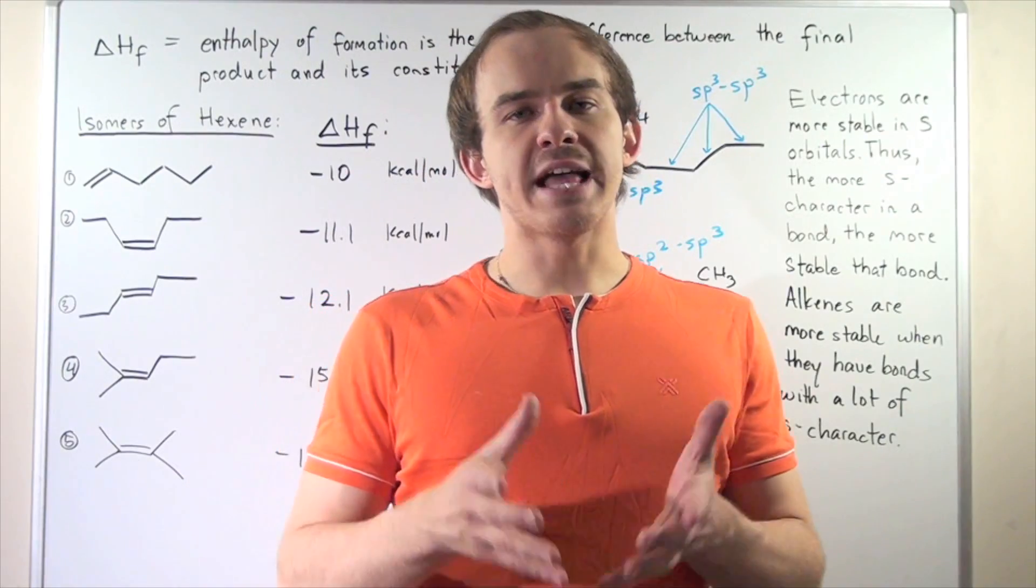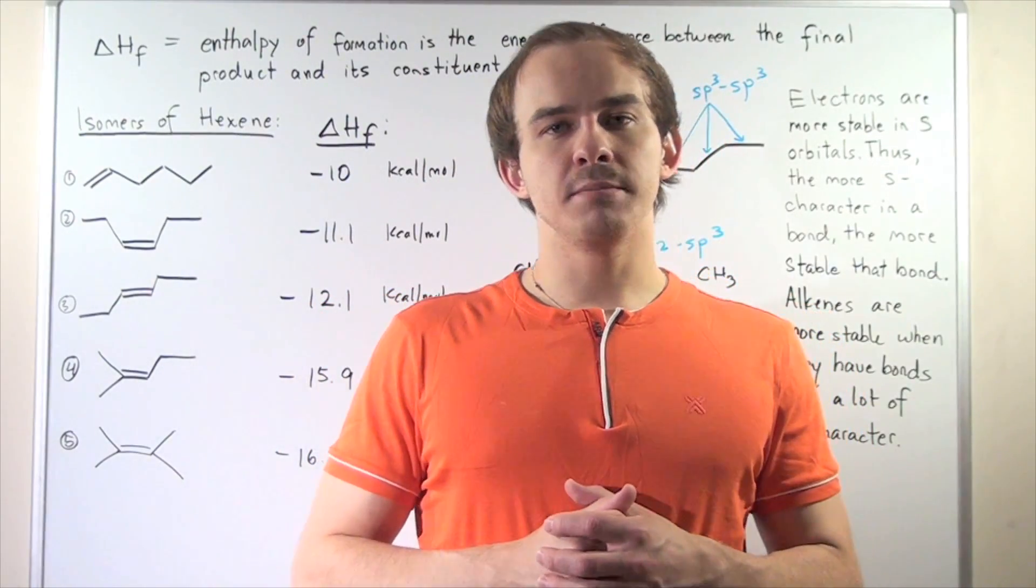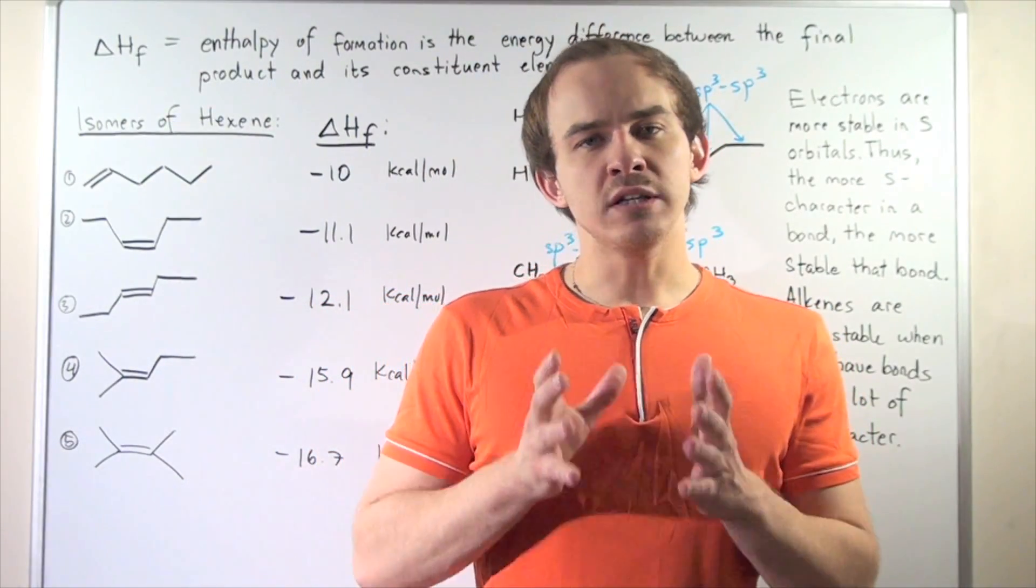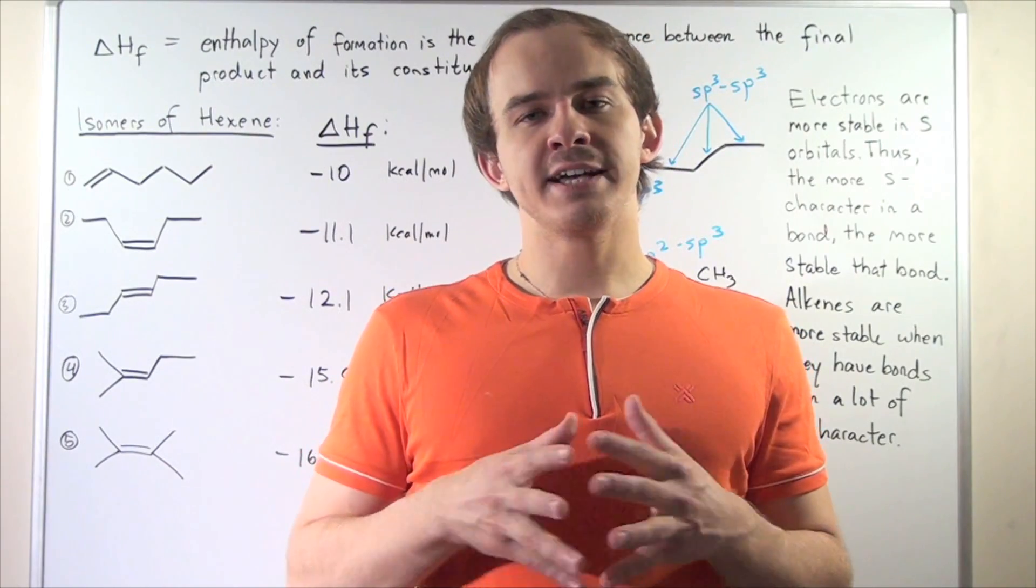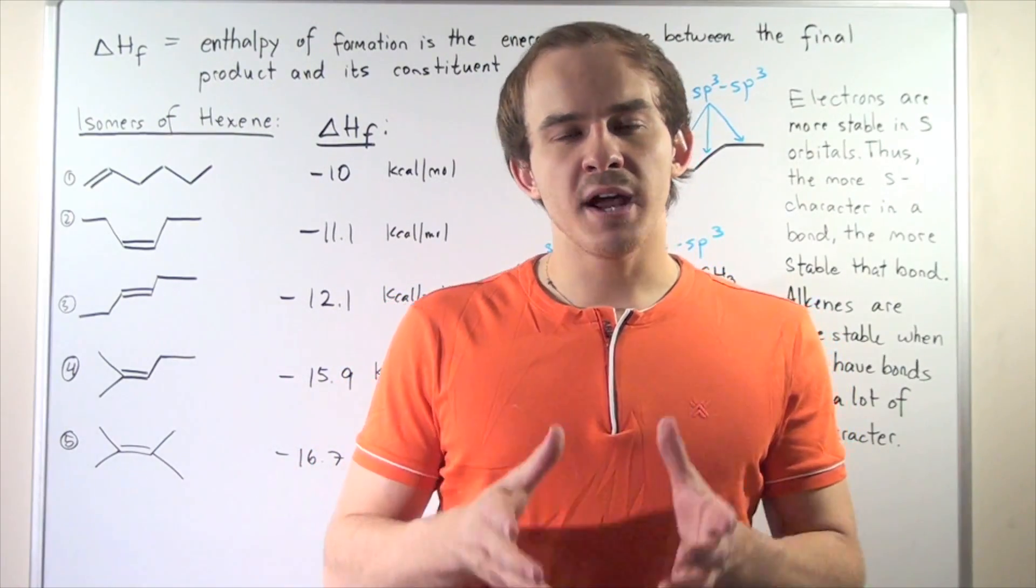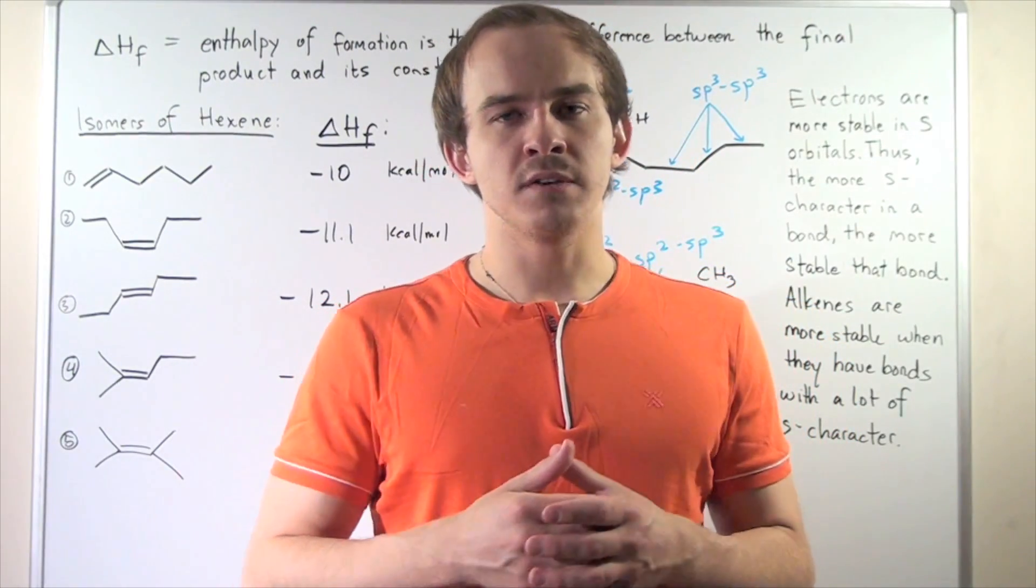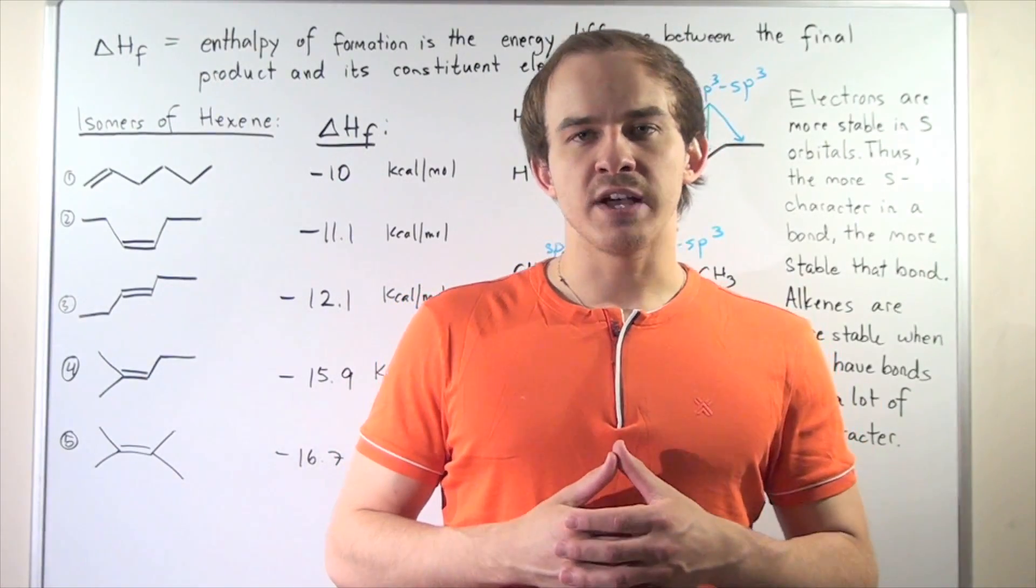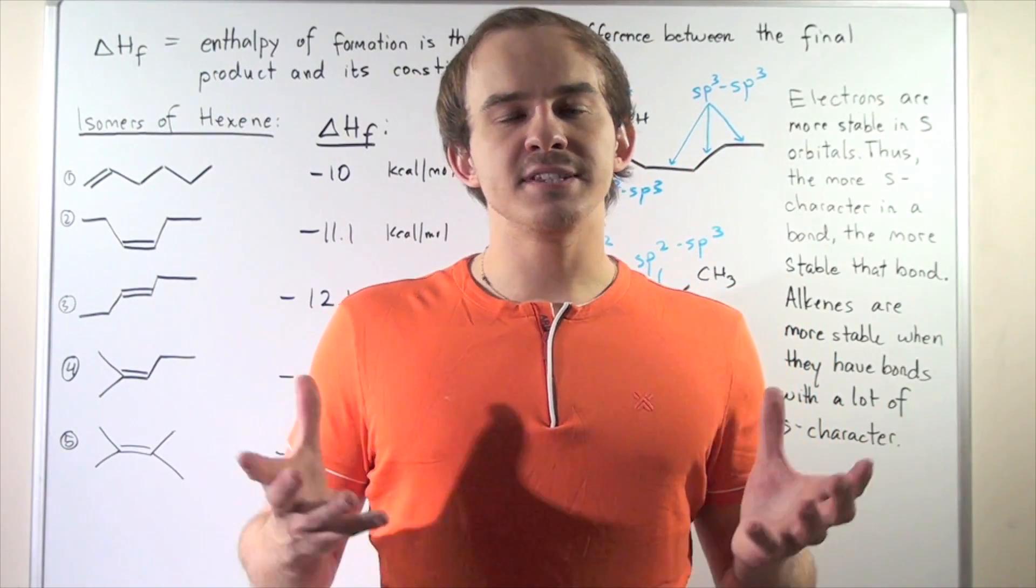So let's suppose we have a certain alkene, let's say hexene for example, and let's write out all different types of isomers of hexene. Now if we compare the stability of one isomer of hexene to another isomer of hexene, we'll see a difference in stability.